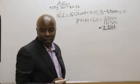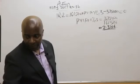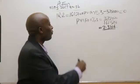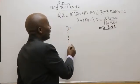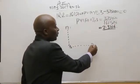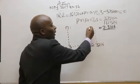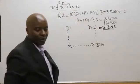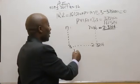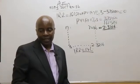My work now is to look in the PVIFA table for where I can see 2.3216 at three years. Looking along the three-year row, I should be able to read the rate of return, which is 14%.